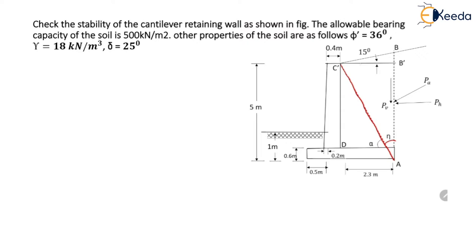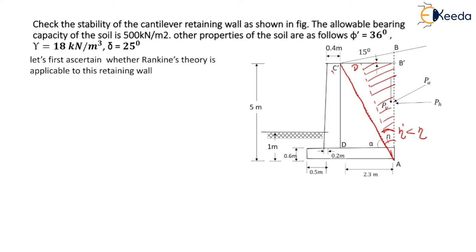Let us assume another line AD such that this line marks the boundary of the shear zone. The angle made by line AD with the vertical is eta dash. So eta dash should be less than angle eta. Only then will Rankine's theory be valid, because if eta dash is greater than eta, the shear zone will intersect the stem. So let us first ascertain whether Rankine's theory is applicable to this retaining wall.